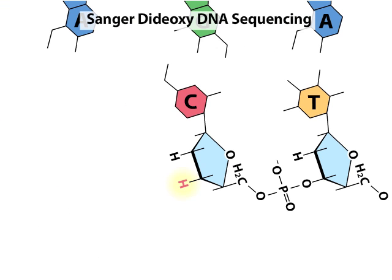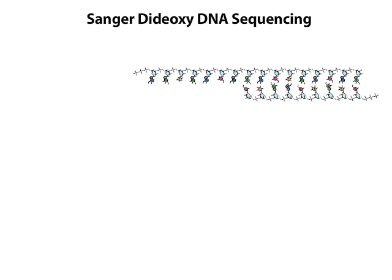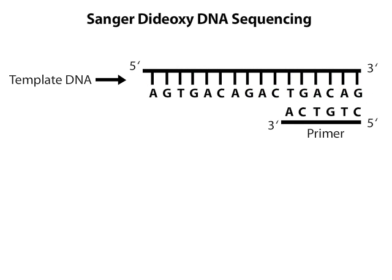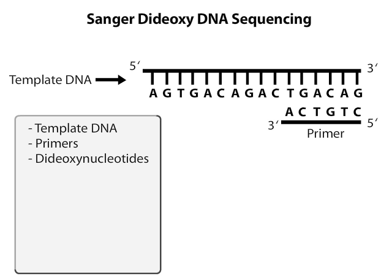How does this feature of dideoxynucleotides play a role in determining the sequence of a piece of DNA? In one application of the Sanger method called dye-terminator sequencing, the reaction mixture contains a limiting amount of each of the 4 dideoxynucleotides: ddATP, ddCTP, ddGTP, and ddTTP. These dideoxynucleotides are labeled with 4 different fluorescent dyes.